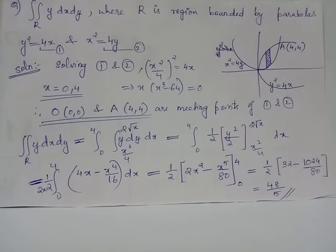Since you have selected a vertical strip, first of all we will have to carry out the integration with respect to y. That is, integration along vertical strip which is integral x squared by 4 to 2 root x, y dy.